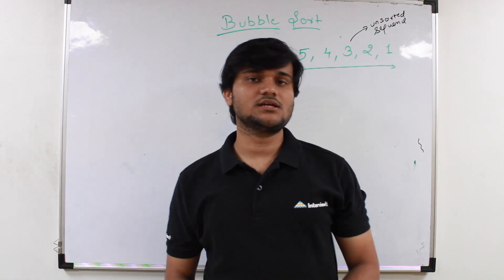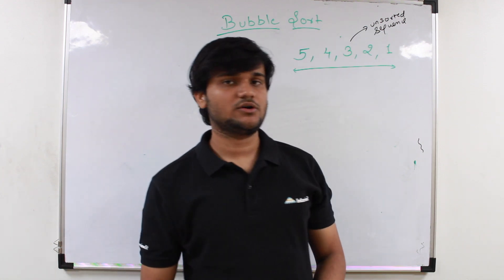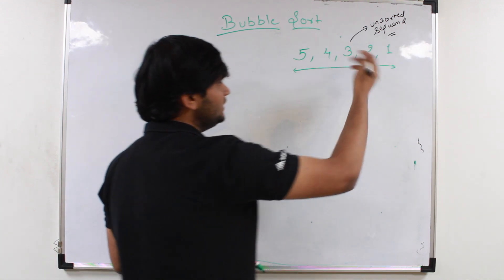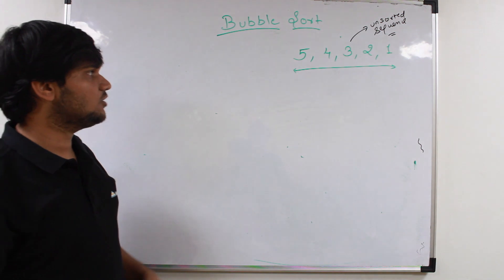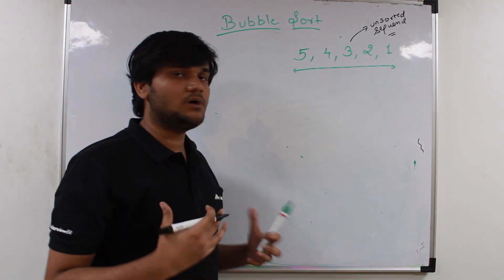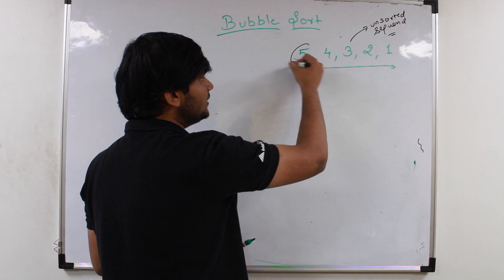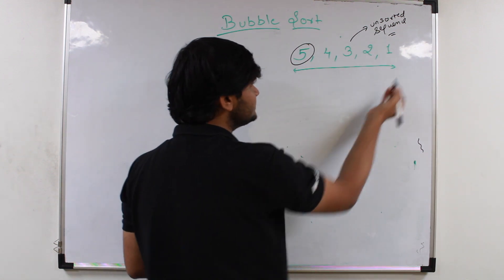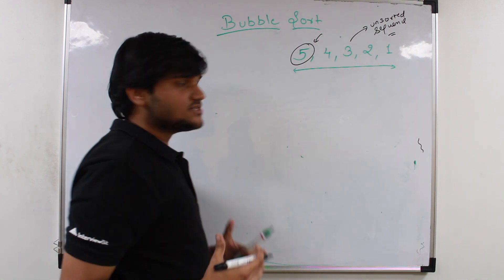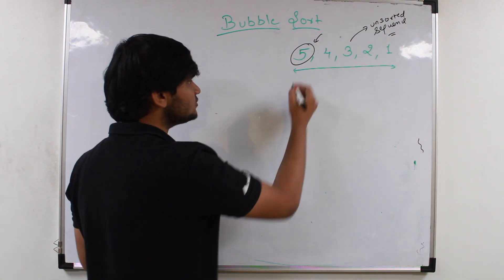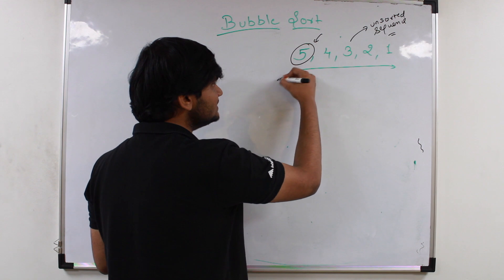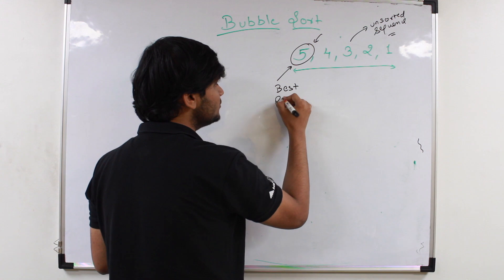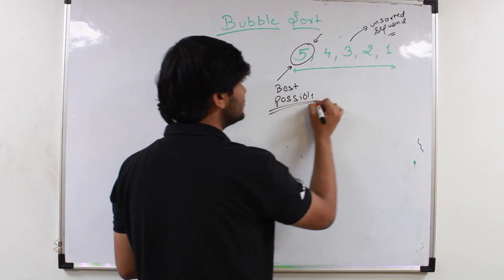Hello guys, so today we are going to discuss another sorting algorithm that is bubble sort. So what bubble sort says is that if you are given any unsorted sequence of integers, the bubble sort algorithm will just try to bubble up the largest possible number in the whole unsorted sequence. So here you can see that currently in this unsorted sequence, 5 is going to be the largest number. Bubble sort will try to just place this largest number from the unsorted sequence to its best possible position.